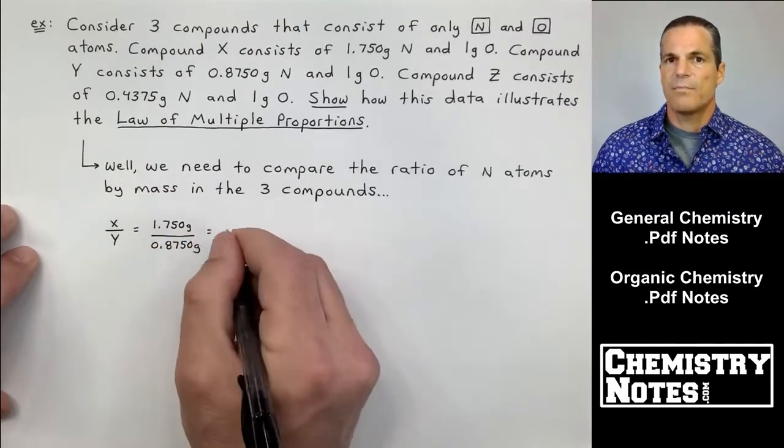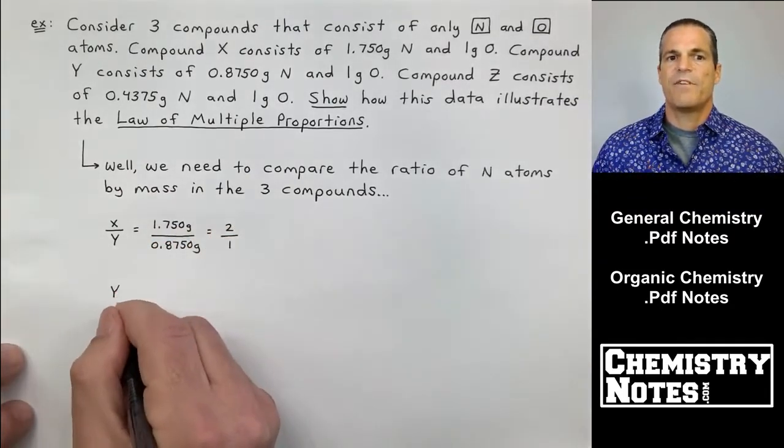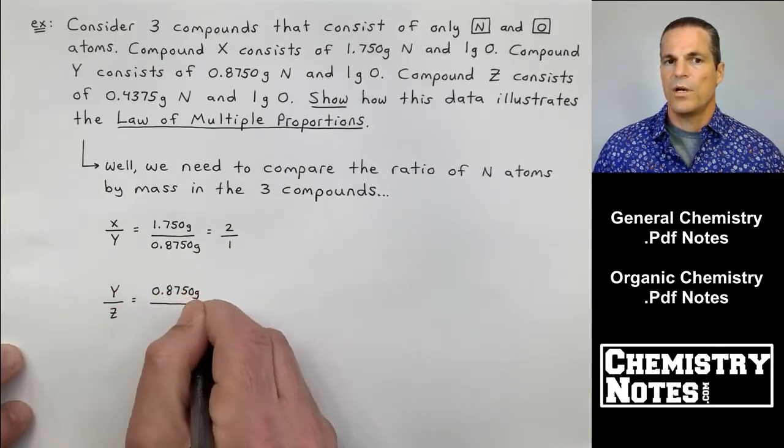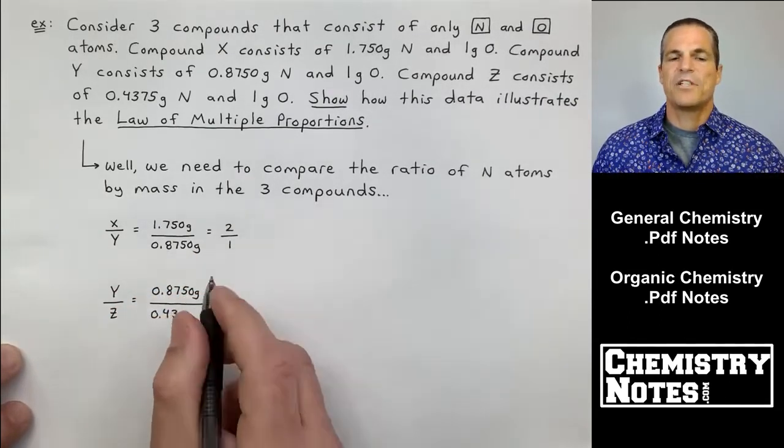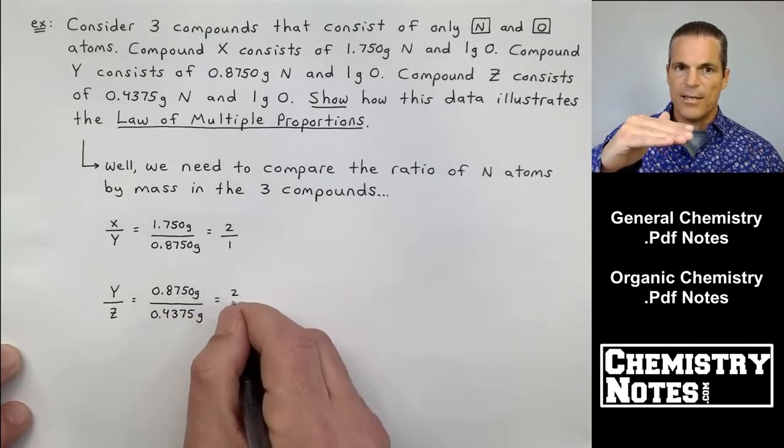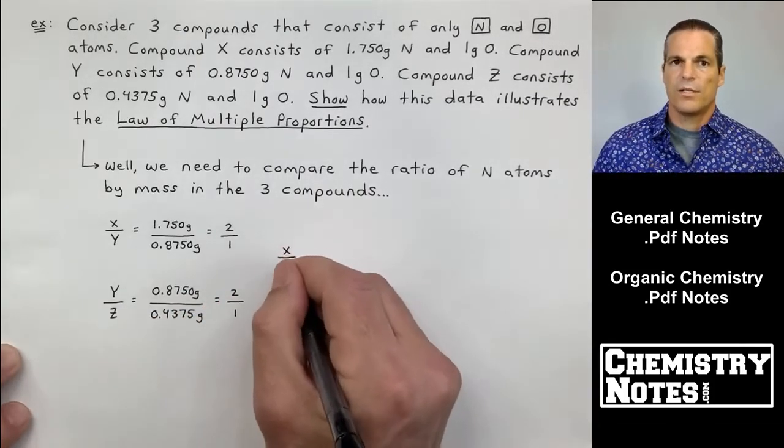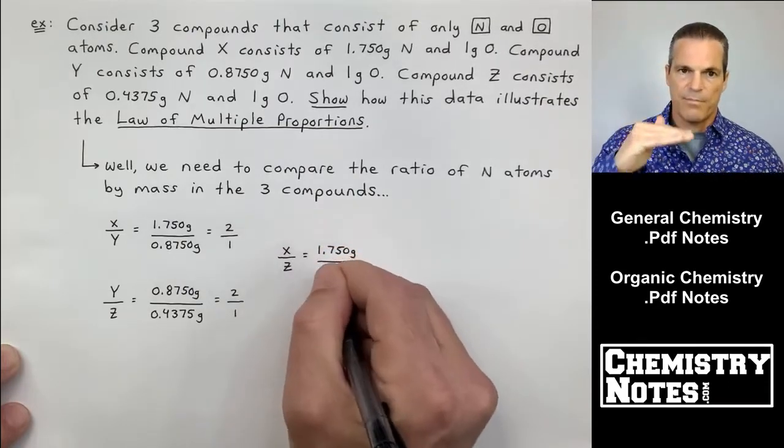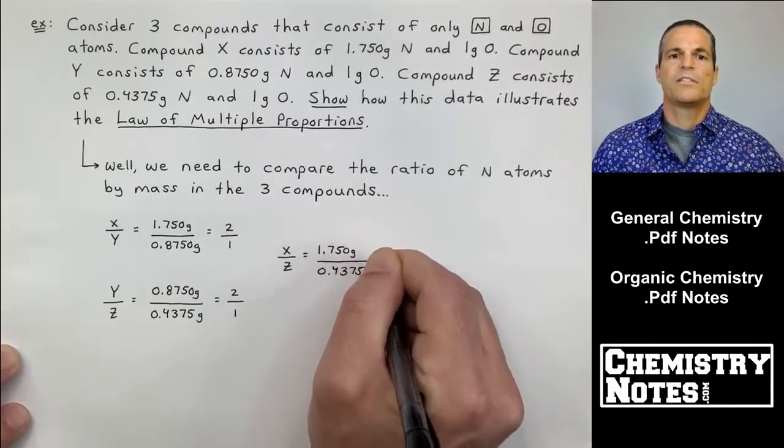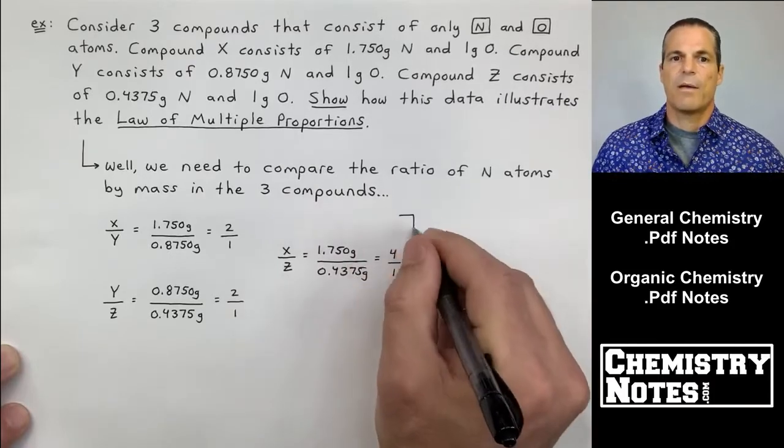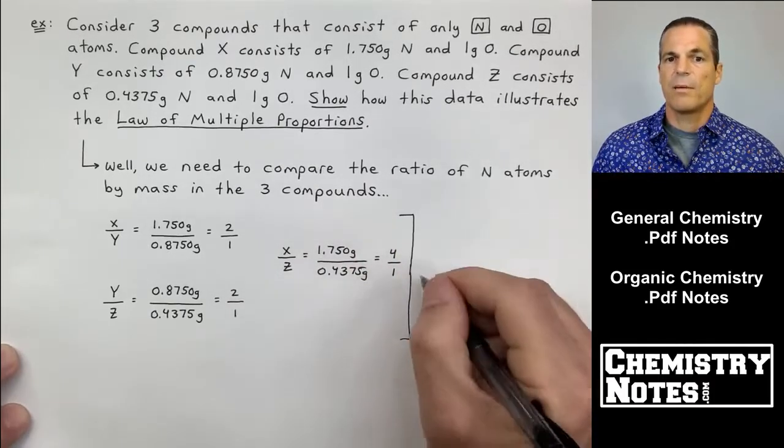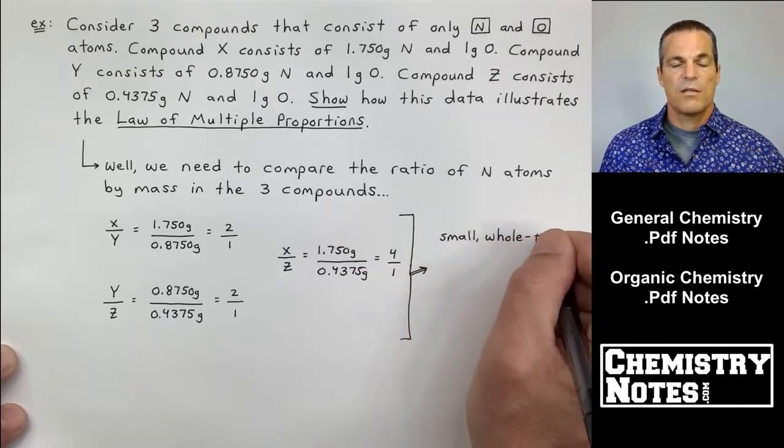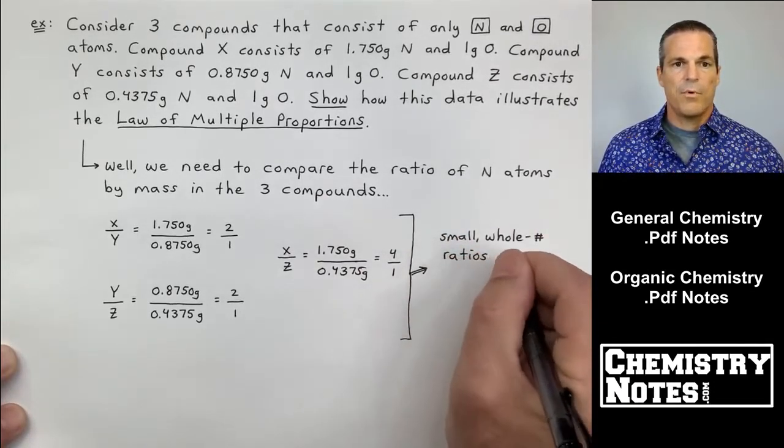So if I do X divided by Y, 1.750 grams of nitrogen divided by 0.8750 grams, two to one. The ratio of nitrogen atoms in Y to Z is also two to one. And then the ratio of nitrogen atoms in compound X to compound Z is 1.75 grams divided by 0.4375 grams, four to one, small whole number ratios.